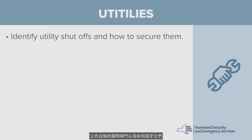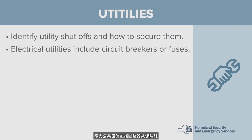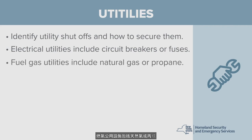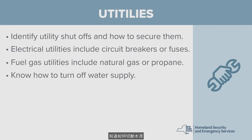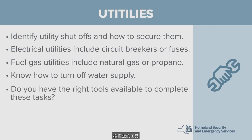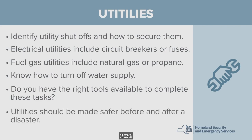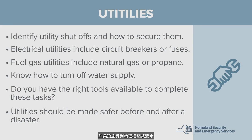When preparing your home for a possible emergency, you should know how to identify utility shutoffs and how to secure them. Electrical utilities include circuit breakers or fuses. Fuel gas utilities include natural gas or propane. And don't forget about your water supply. Check your tools — do you have the right ones available to complete these tasks? Remember that furnaces, electrical panels, water heaters, fuel tanks, and other utilities must be made safe before an event, and then again after the event if they have sustained physical damage or flooding.